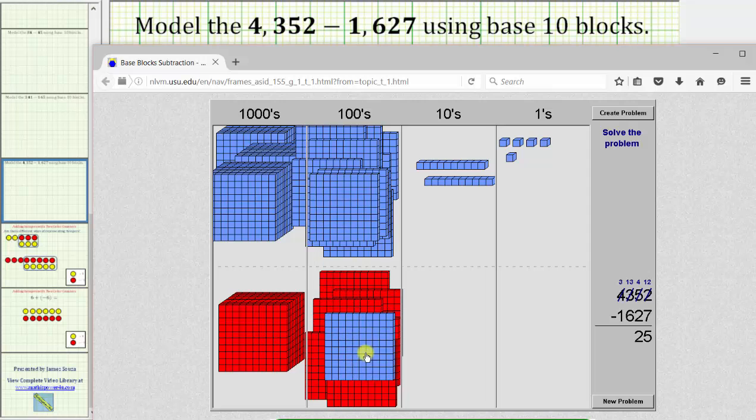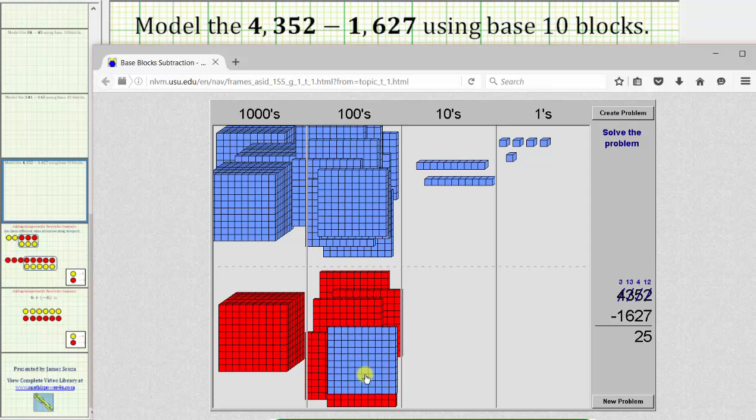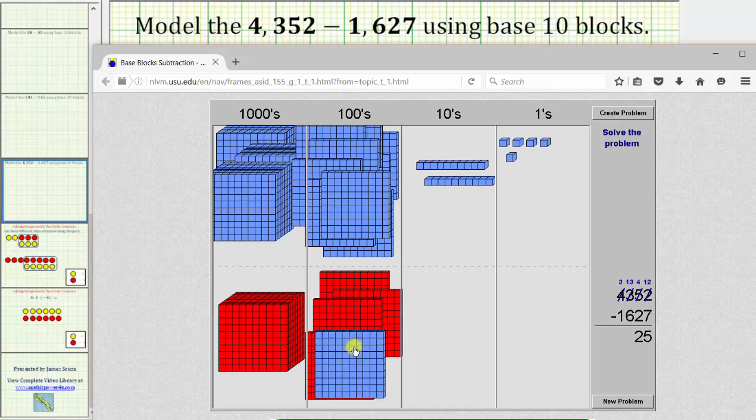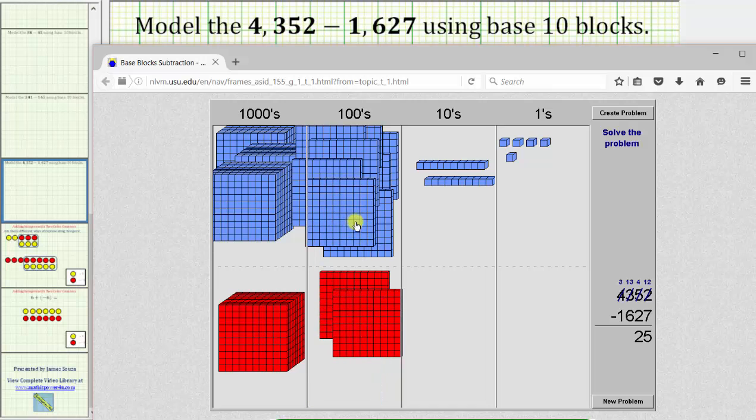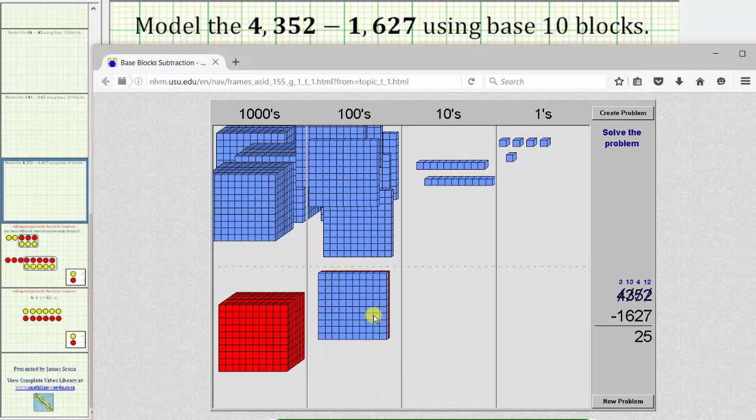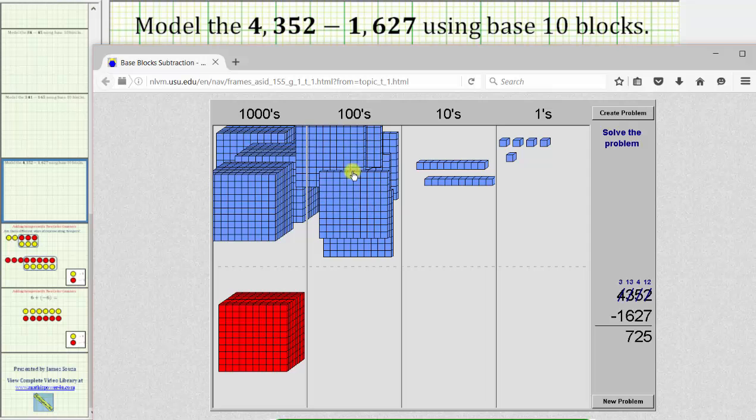So we subtract one, two, three, four, five, six flats. And it might be hard to tell here, but we're left with seven flats here.